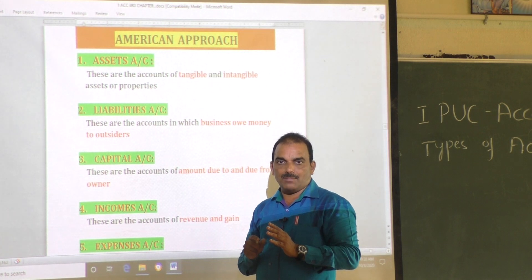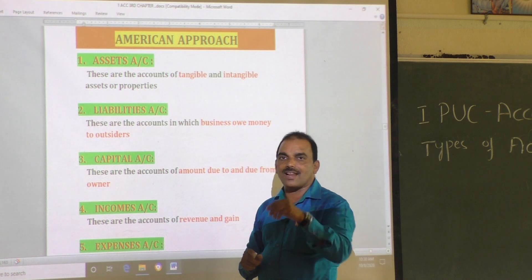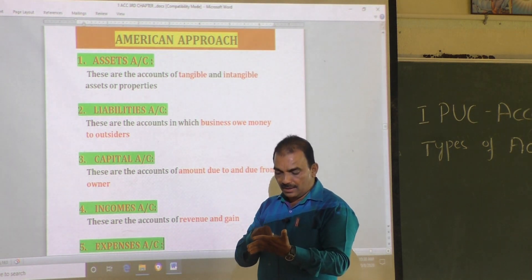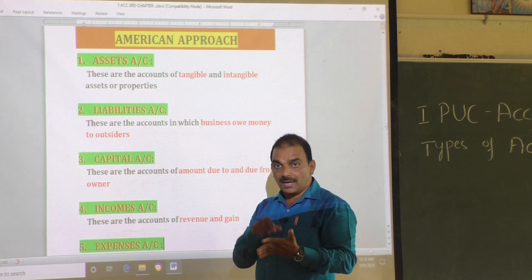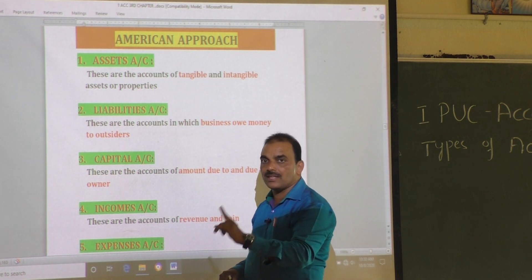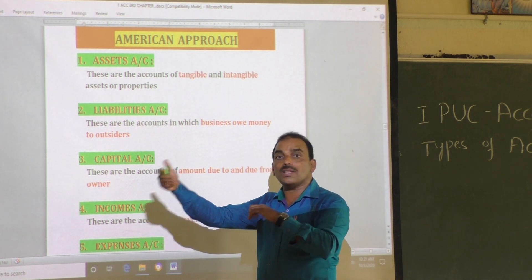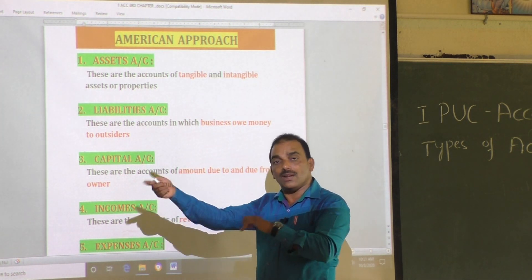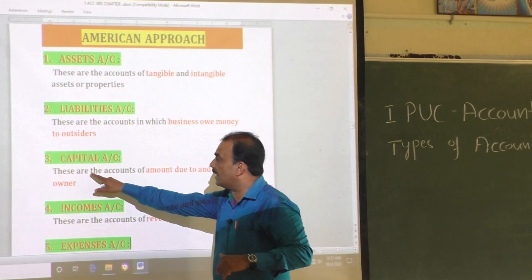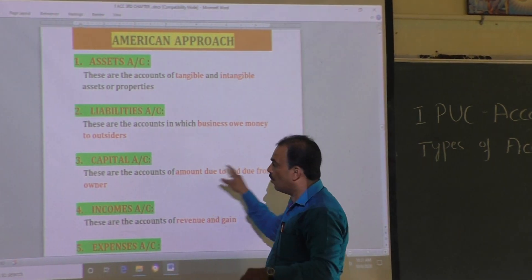Or it may be drawing. Drawing is a capital account — very important. What do you mean by drawing? For personal use, the money or money's worth withdrawn by the proprietor from the business is called drawing. In accounting, drawing means the amount of money withdrawn by the proprietor from his business for his personal use. Therefore it is said: capital account means this is the account of amount due to and due from the owner.